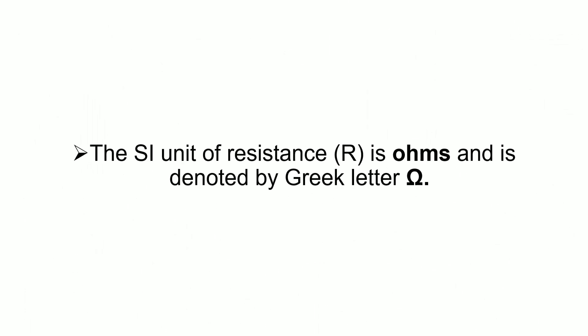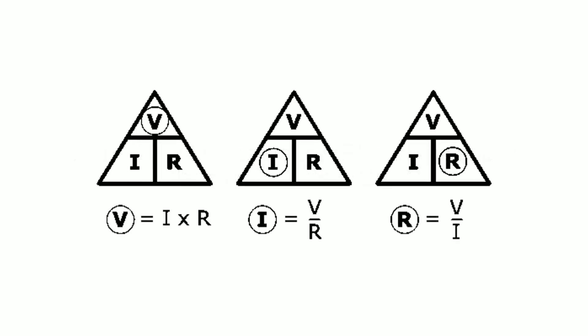It is sometimes easier to remember this Ohm's law relationship by using pictures. Here, the three quantities of voltage, current, and resistance have been superimposed into a triangle, giving voltage at the top with current and resistance below. This arrangement represents the actual position of each quantity within the Ohm's law formulas.